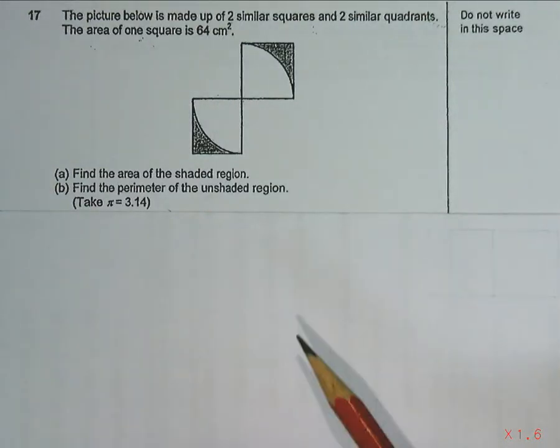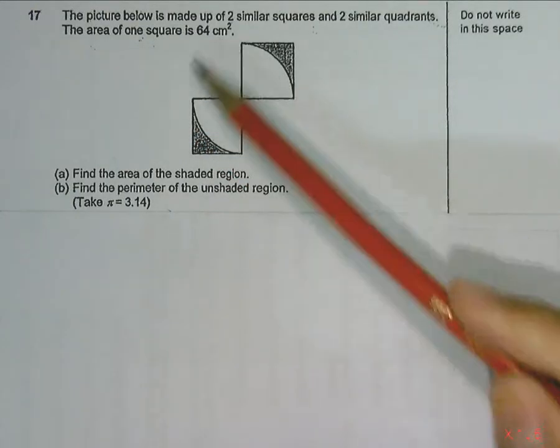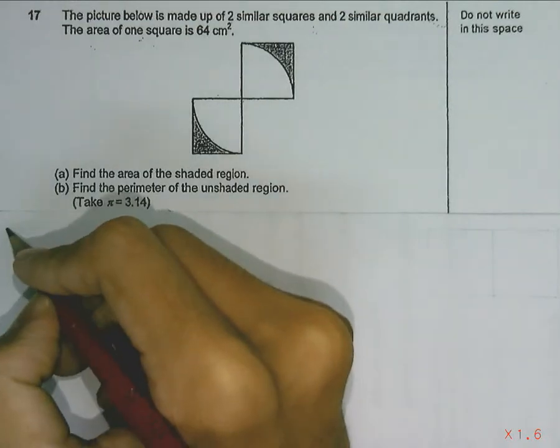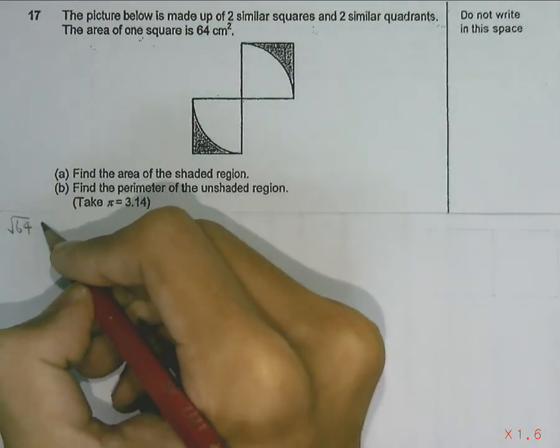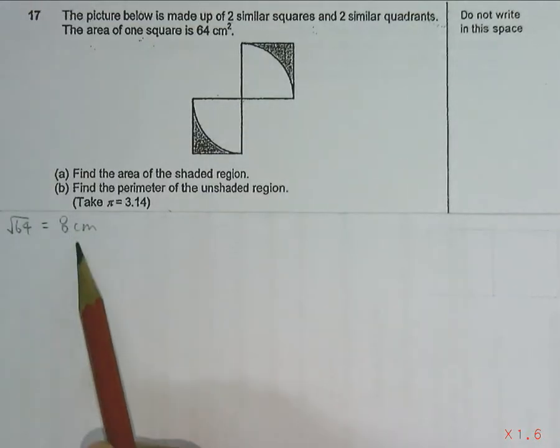One clue given in this question is that the area of one square is 64 cm². So in order to find the length of one side of the square, we will take square root 64, which will give us 8 cm. So this is the length of one side of the square.